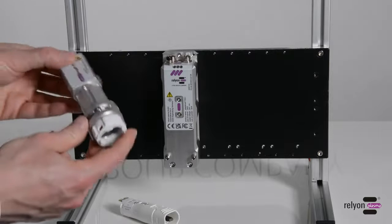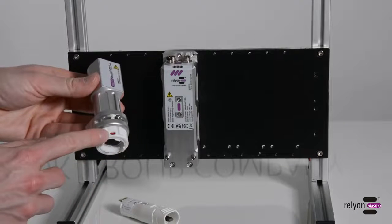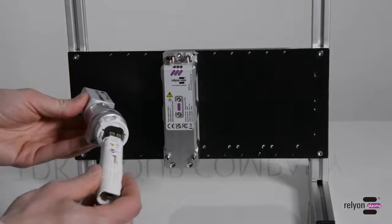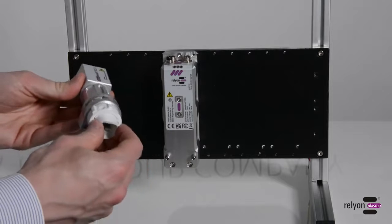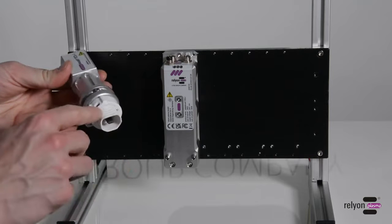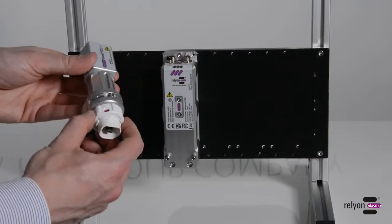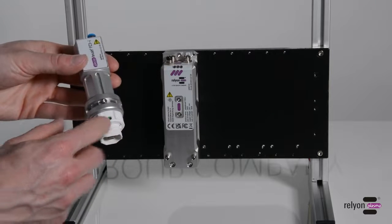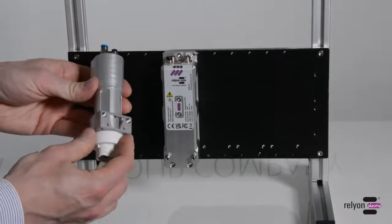The module cannot be inserted the wrong way round, as it is coded accordingly. Insert it and turn the locking ring to the green lock symbol. You can now place the module carrier on the driver unit via the two locating holes on the rear. It audibly locks into place.